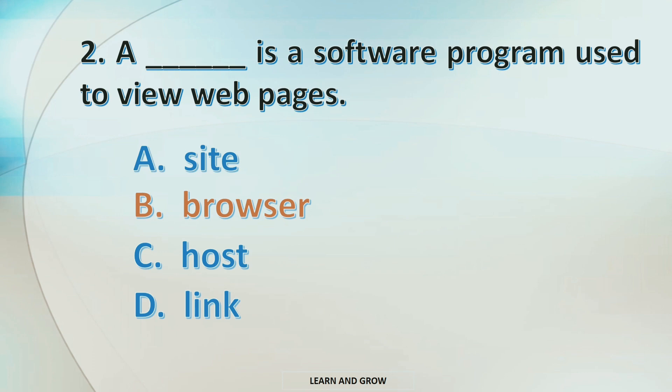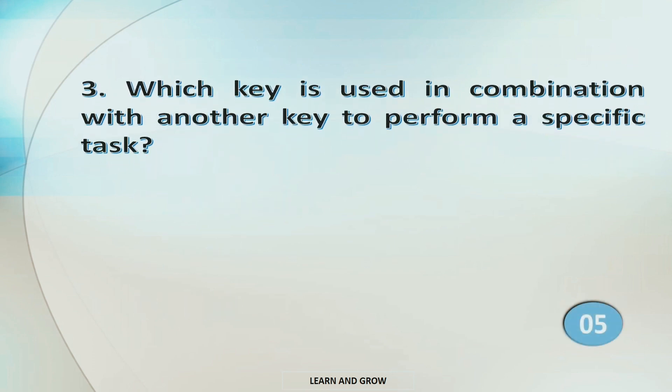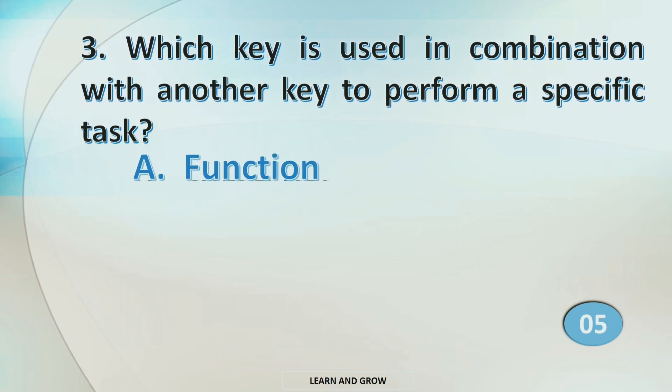The right answer is option B: Browser. Which key is used in combination with another key to perform a specific task? Option A: Function, B: Spacebar, C: Control, or D: Arrow.